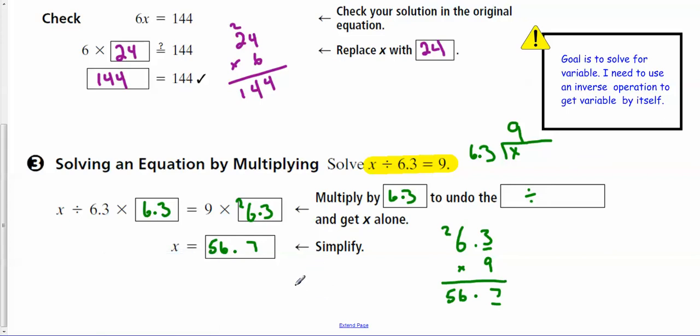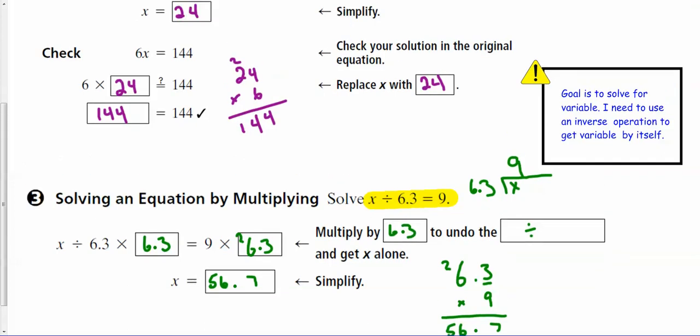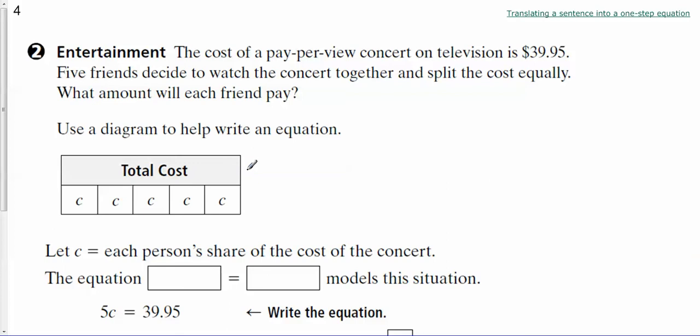56.7 is my answer. x equals 56.7. All right, so let's take a look at the next page over here. We are going to be translating a sentence into a one-step equation. So let's get our highlighters out and see if we can highlight anything. So the cost of a pay-per-view concert on television is $39.95. Five friends decide to watch the concert and they split the cost equally. So the question asks, what will each friend pay?